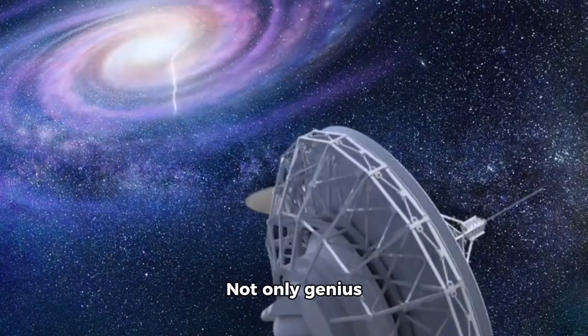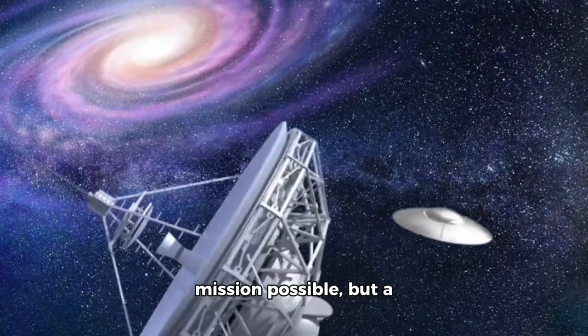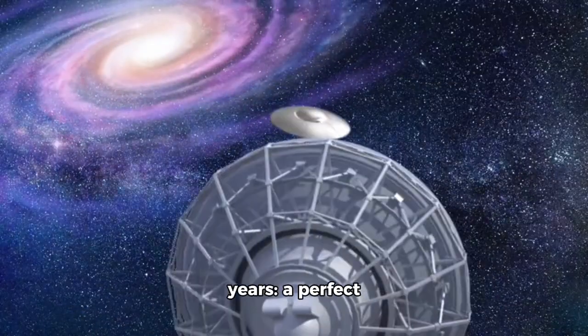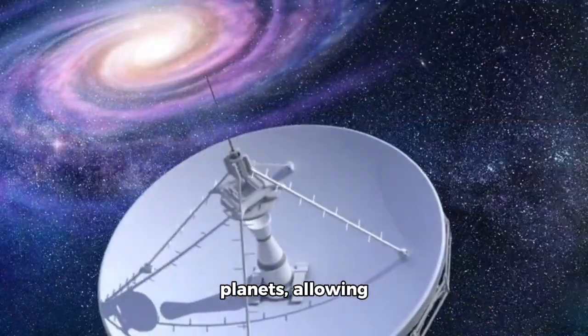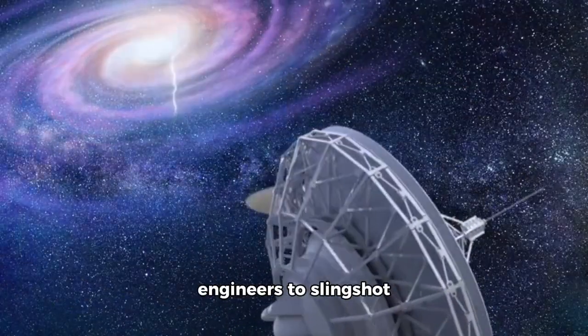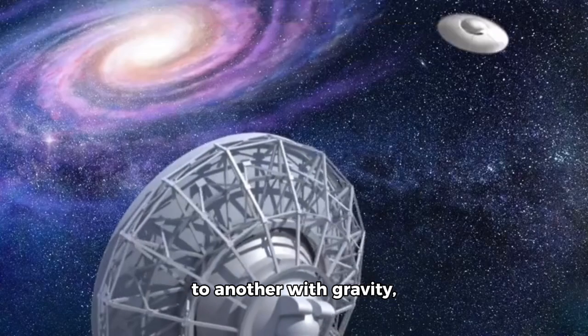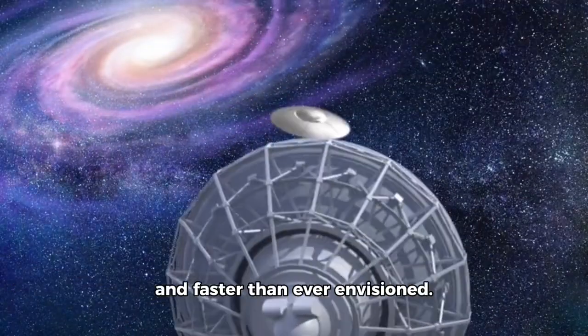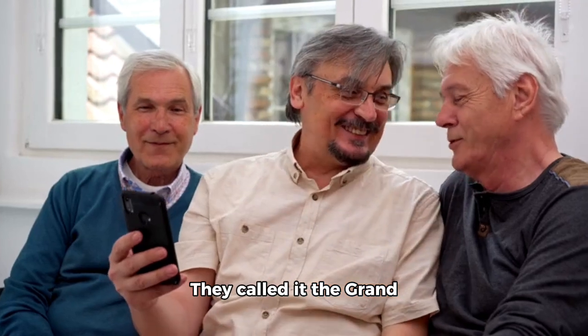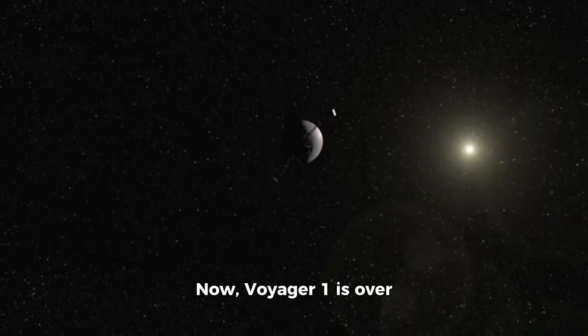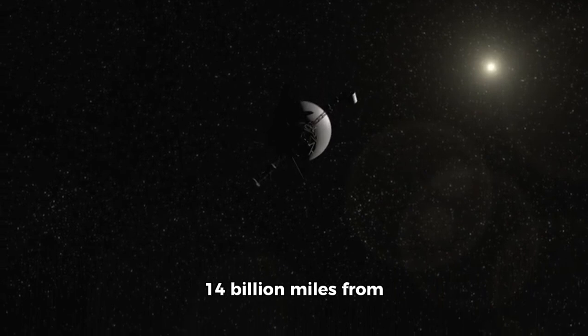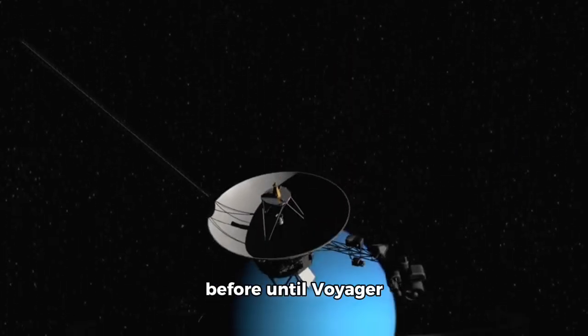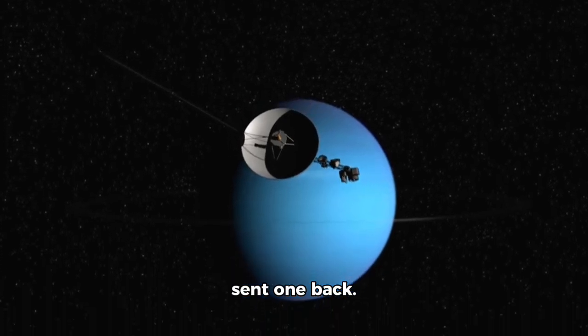Not only genius engineering made this mission possible, but a cosmic coincidence that happens once every 176 years. A perfect alignment of the planets, allowing engineers to slingshot Voyager from one place to another with gravity. They called it the Grand Tour, and it was successful. Now, Voyager 1 is over 14 billion miles from Earth, traveling in an area no other human signal had ever reached before until Voyager sent one back.